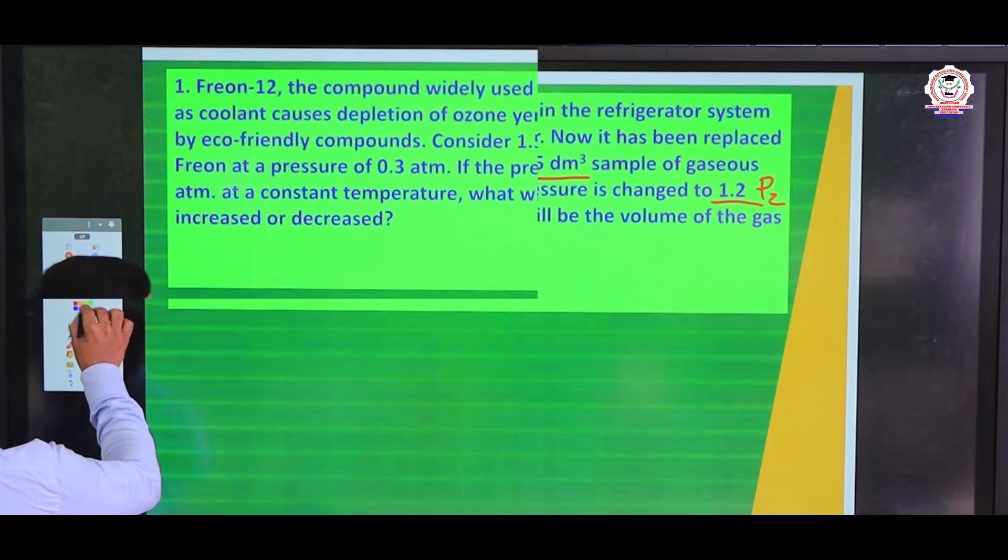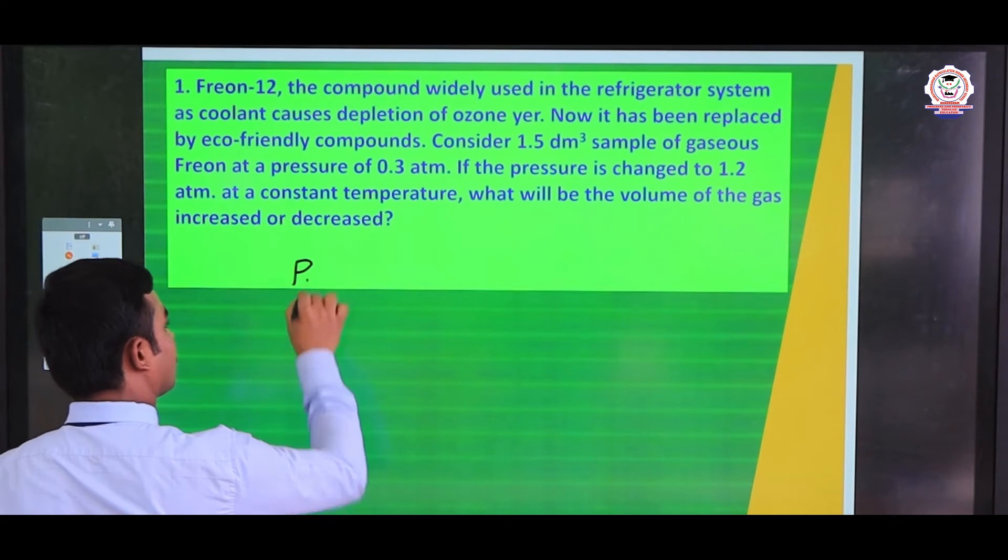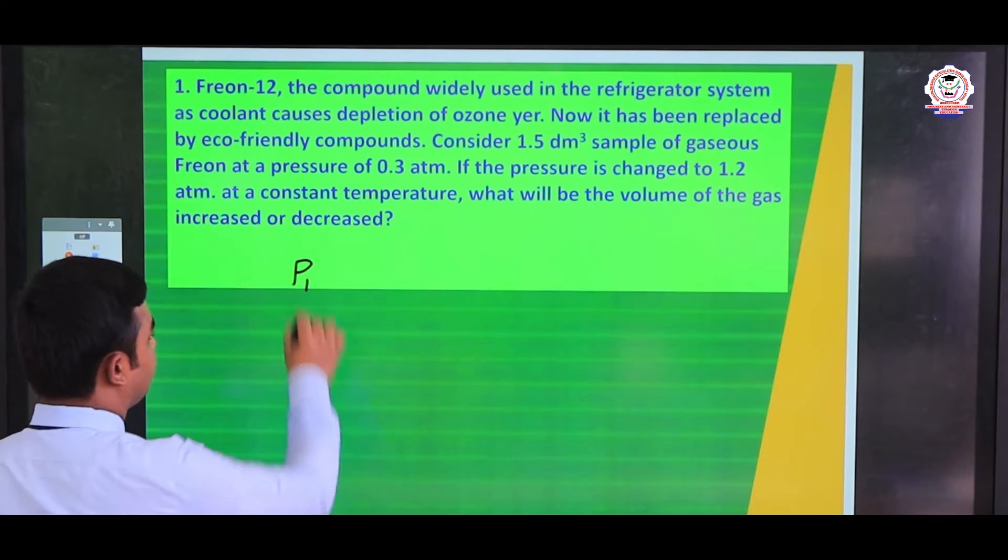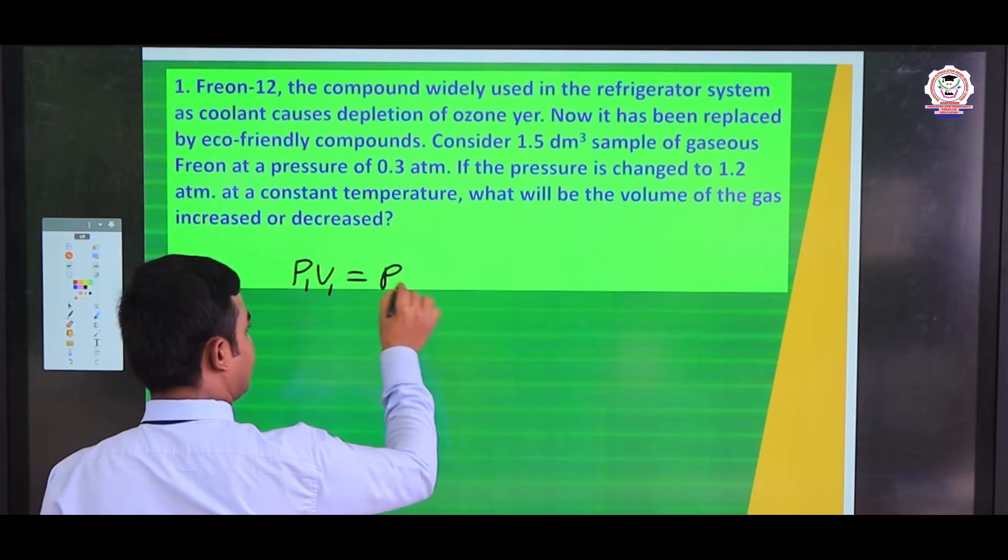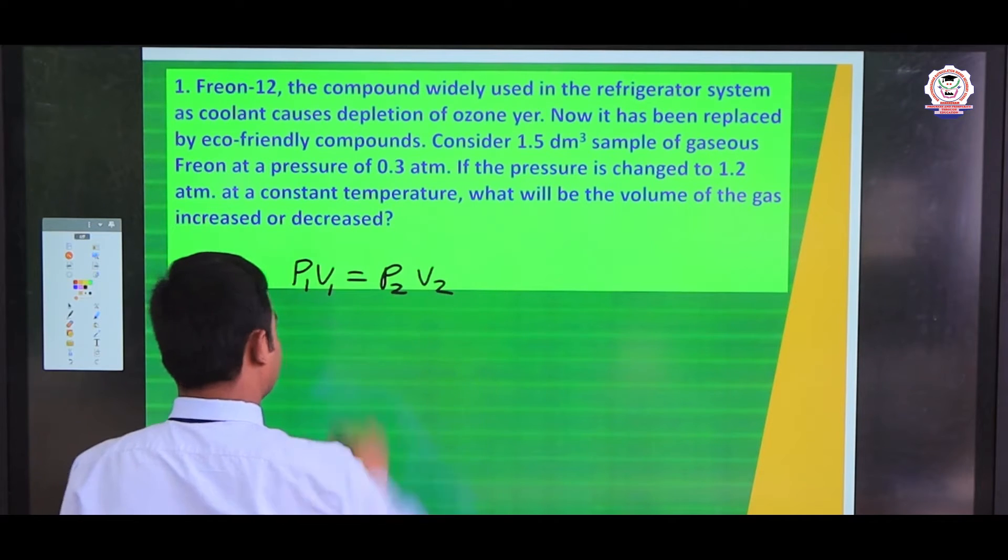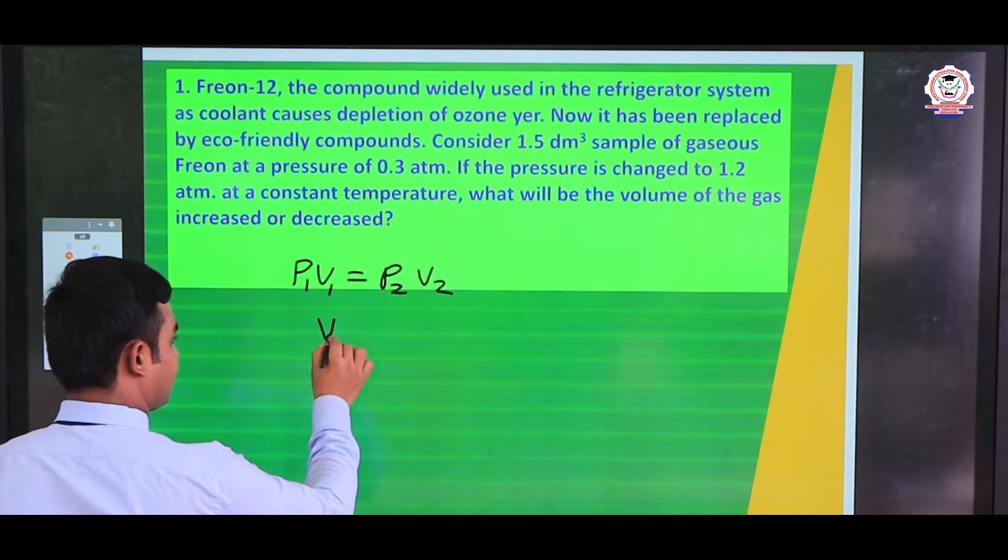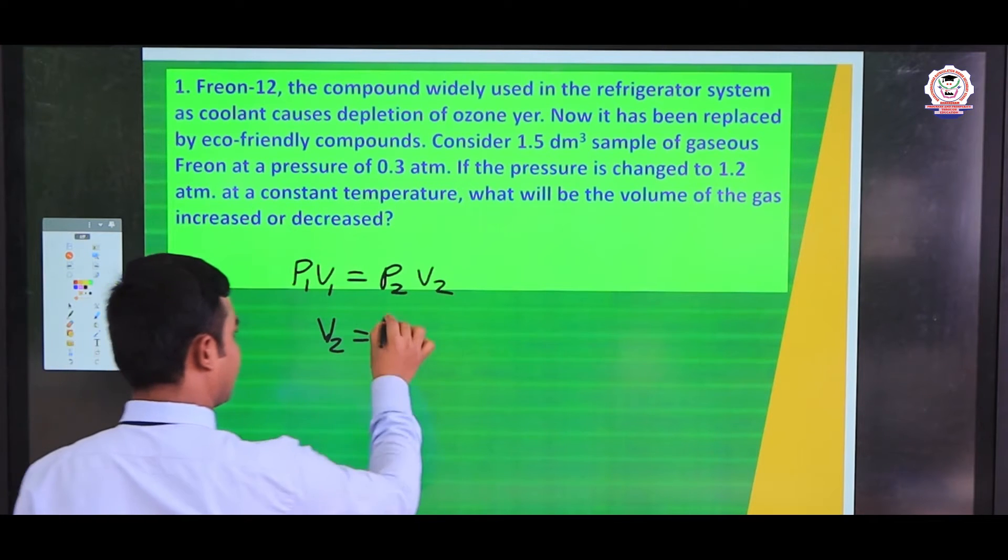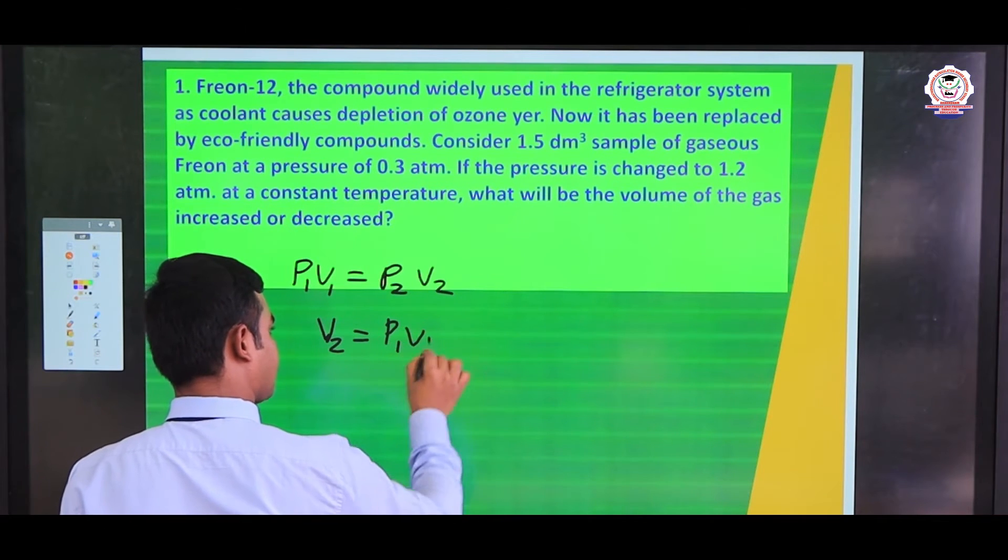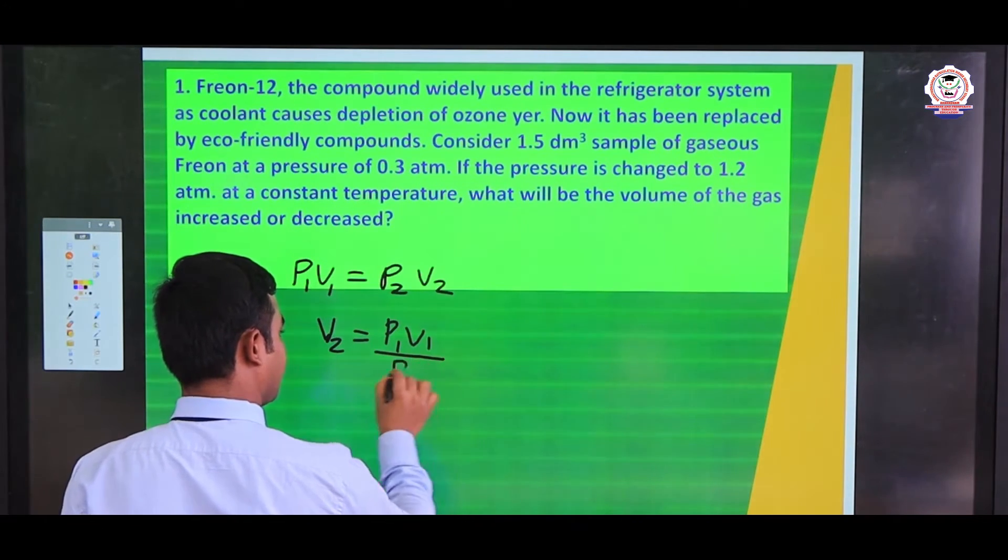Let us move. First we write the formula Boyle's formula: P₁V₁ = P₂V₂. Here we want to find the V₂ value. So only you keep V₂ on the left side. So P₁V₁ divided by P₂.